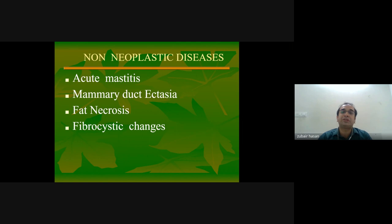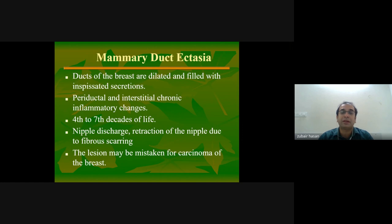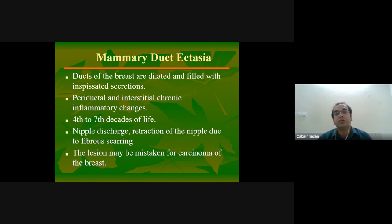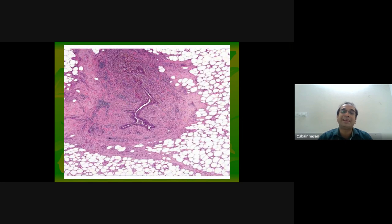The non-neoplastic diseases commonly are acute mastitis, mammary duct ectasia, fat necrosis, and fibrocystic changes. Mammary duct ectasia is when the ducts of the breast get dilated and filled with inspissated secretions, having periductal interstitial and chronic inflammatory changes, seen in the fourth to seventh decades of life. Clinically, the patient presents with nipple discharge and retraction of the nipple due to fibrous scarring. The lesion may be mistaken for carcinoma of the breast.